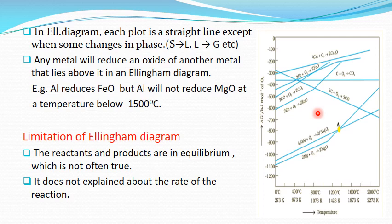The Ellingham diagram has two main limitations. First, it does not explain the rate or speed of reaction — it explains only whether a reaction is possible or not, but not how fast the reaction will take place. Second, this whole theory assumes that reactants and products are in equilibrium, but reactants and products do not always reach equilibrium.